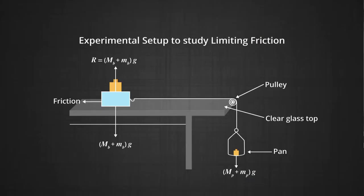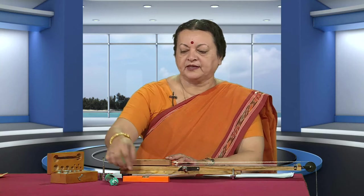For our experiment, we have a horizontal table with glass fixed on it, a block of wood, a pulley arrangement with a pan fixed here, some weights, a spirit level, and a spring balance.